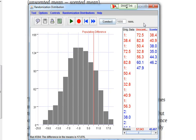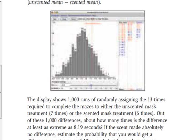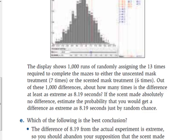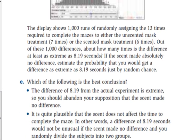When we're looking at a randomization distribution, what you're looking for is for it to be on the outer edges. If we look at E, it says which of the following is the best conclusion. The better conclusion is that second option - it says it's quite plausible that the scent does not affect the time to complete the maze because it's closer to the middle of this data for this randomization distribution.